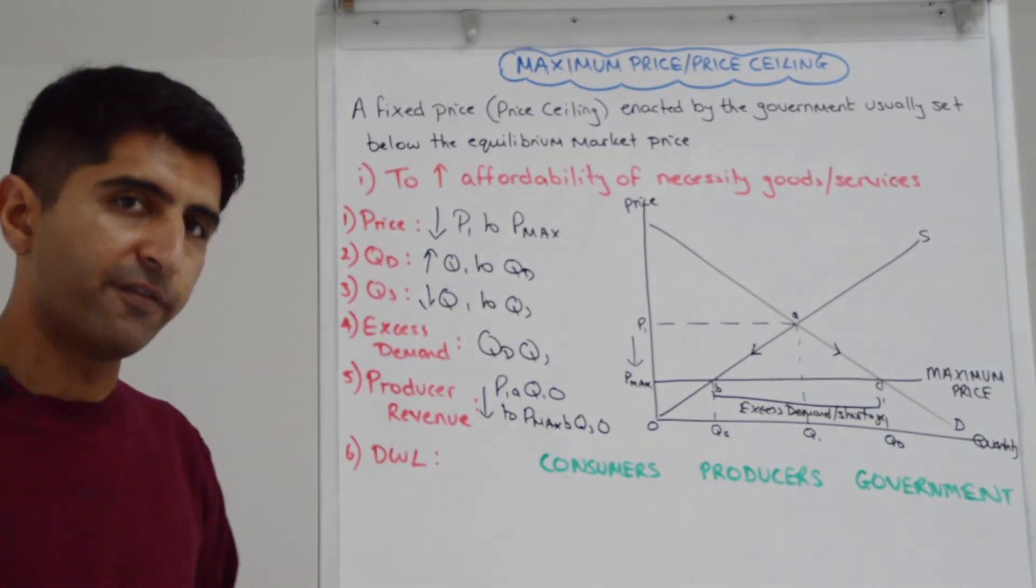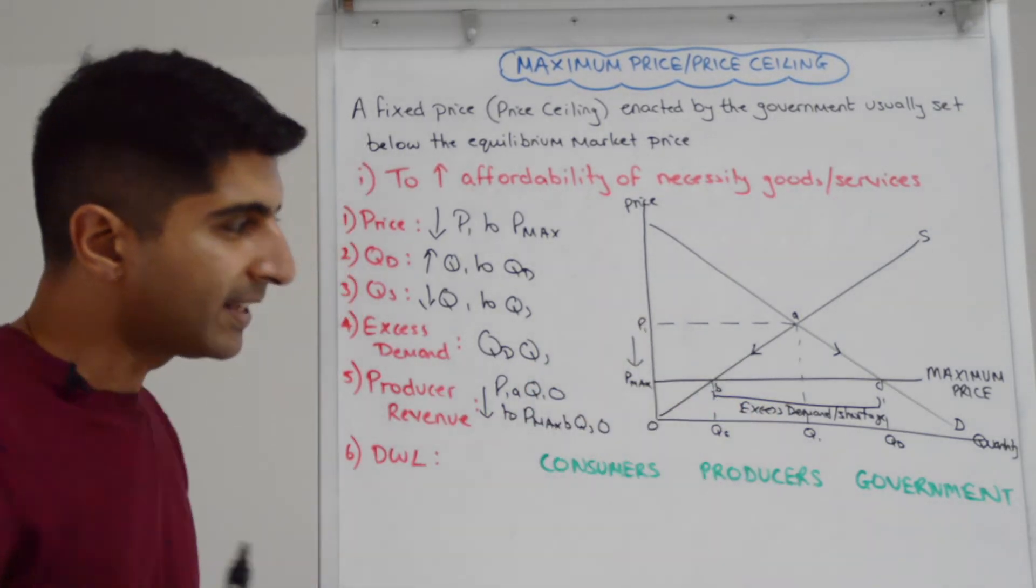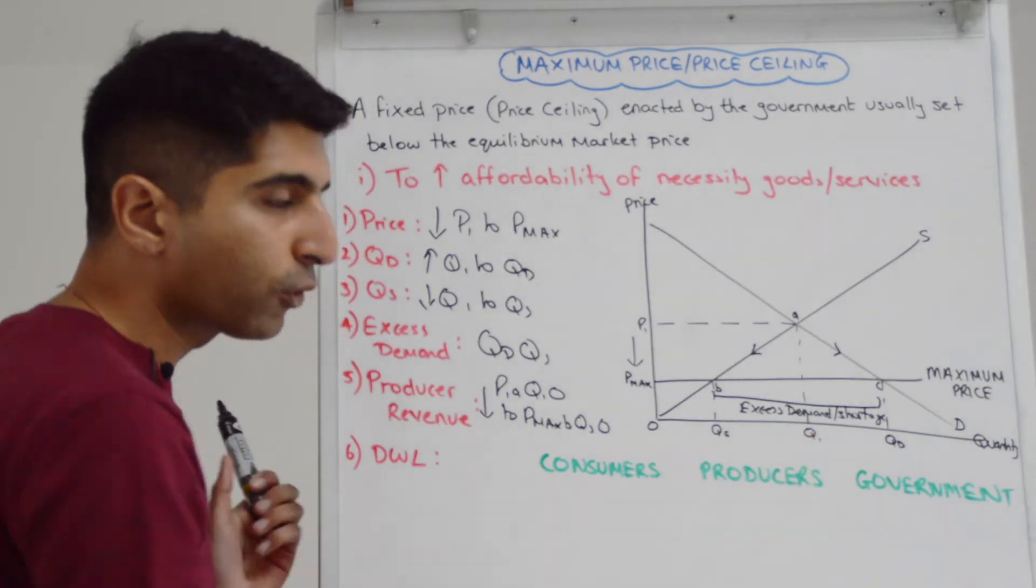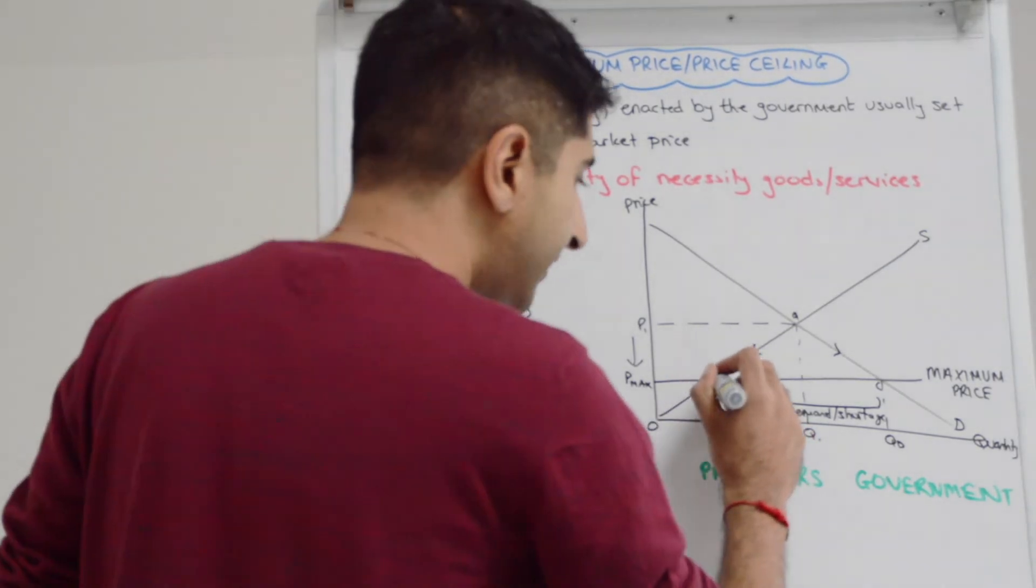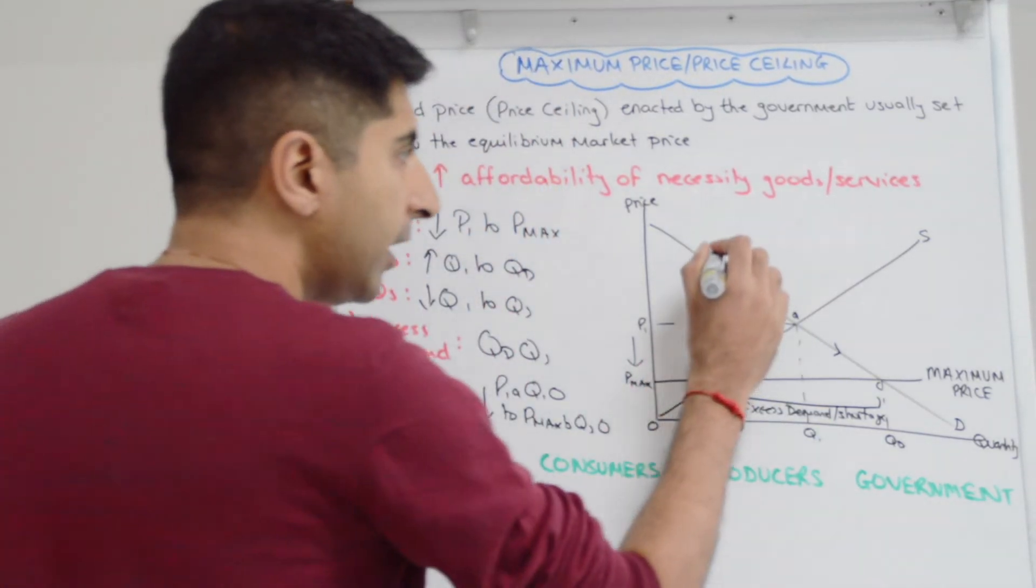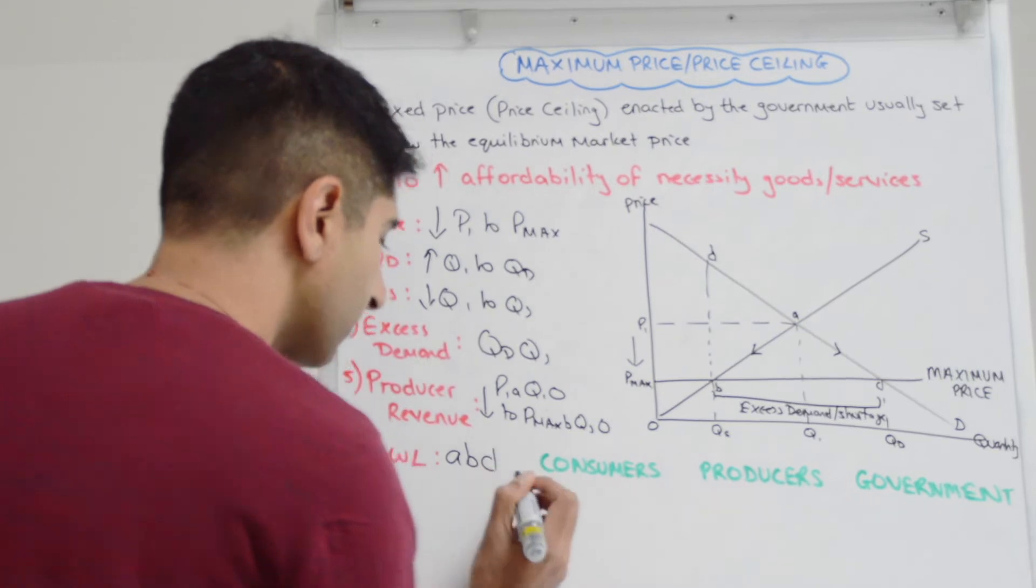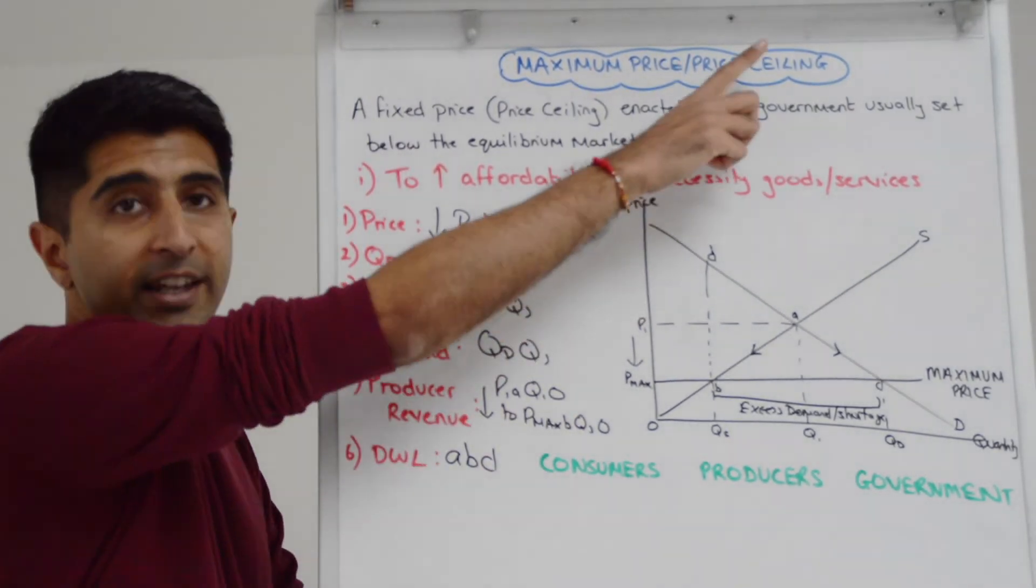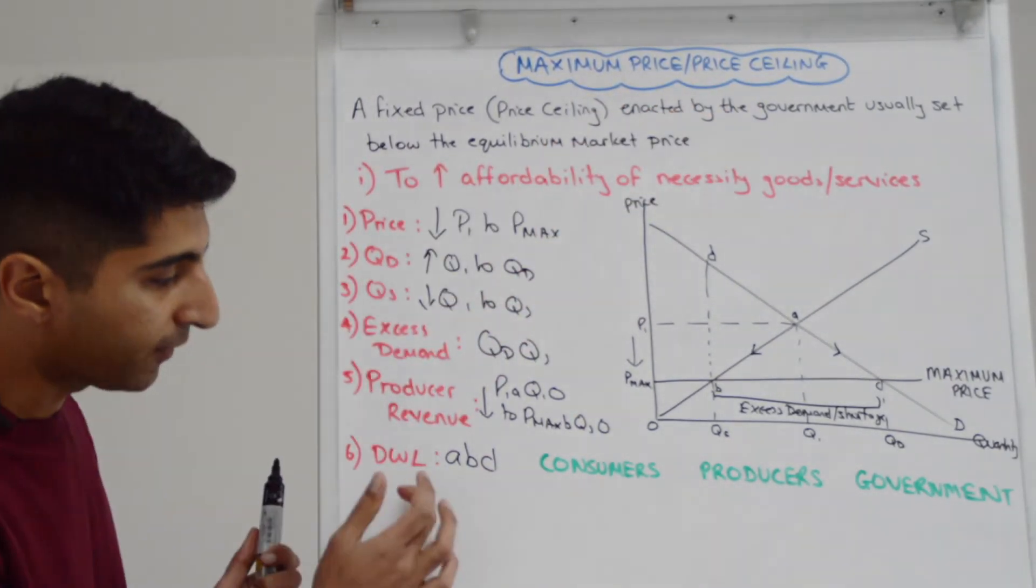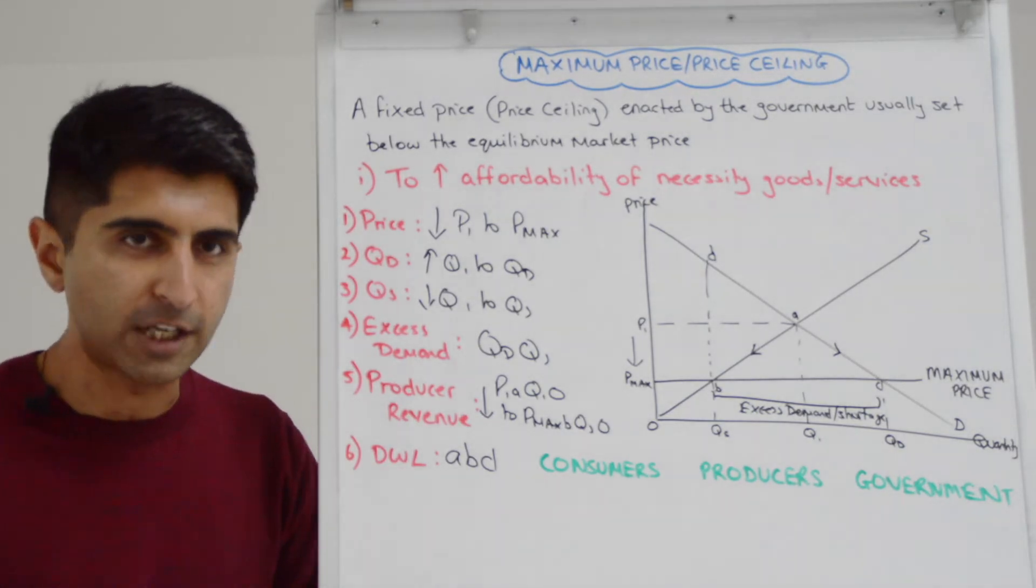So producers are being hit very hard by maximum prices. And by governments intervening and reducing the overall quantity in the market, they're creating a deadweight welfare loss. If I extend this line up and call this point D, our deadweight loss is the triangle ABD. You guys can click on this link over here, watch that video where I explain why a maximum price creates a deadweight welfare loss and what the implications are of that.